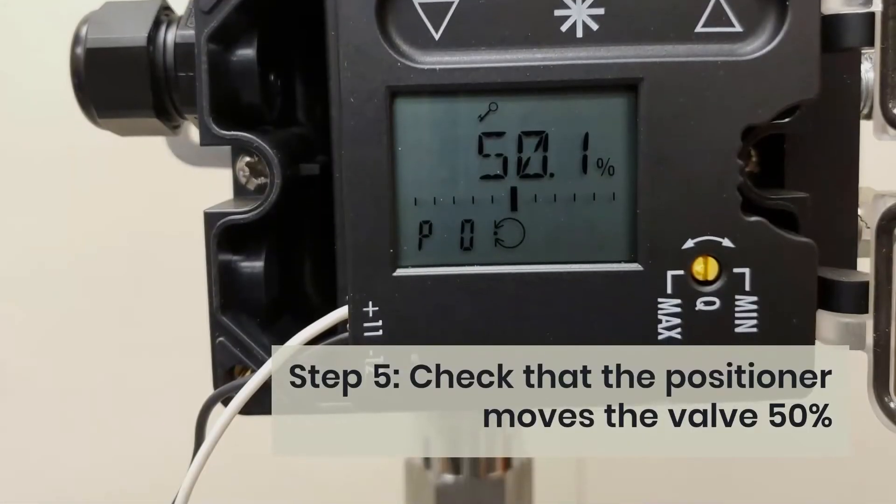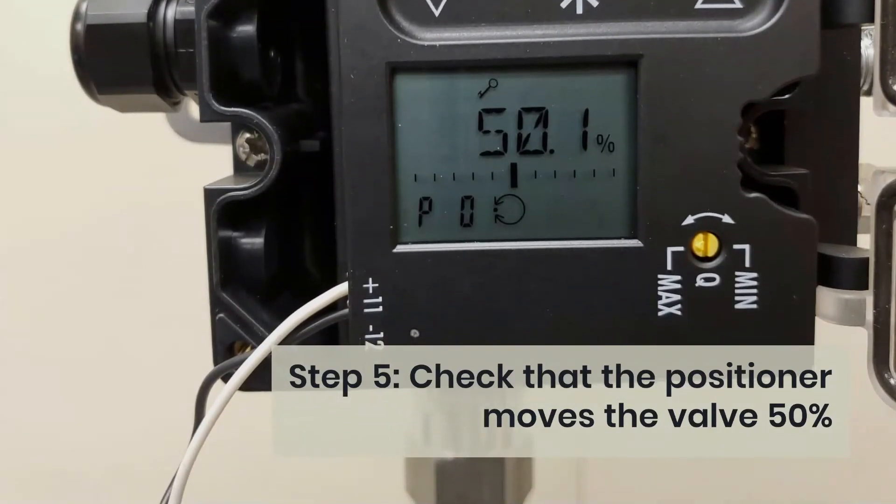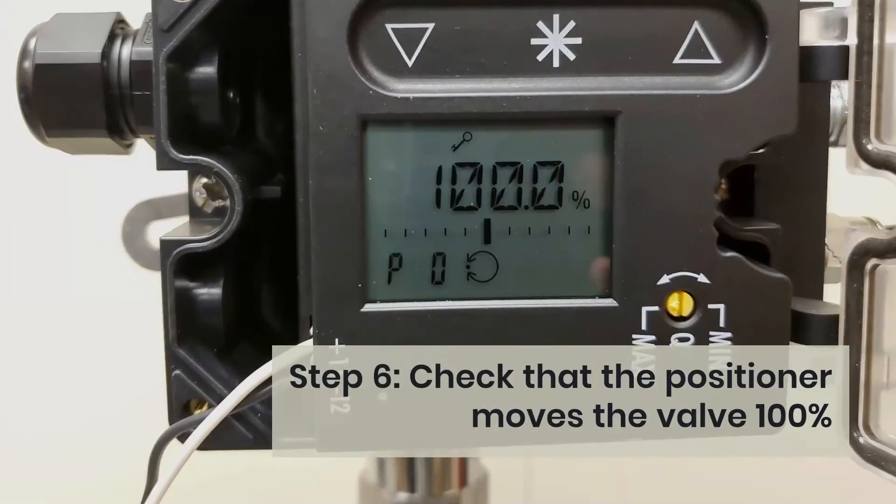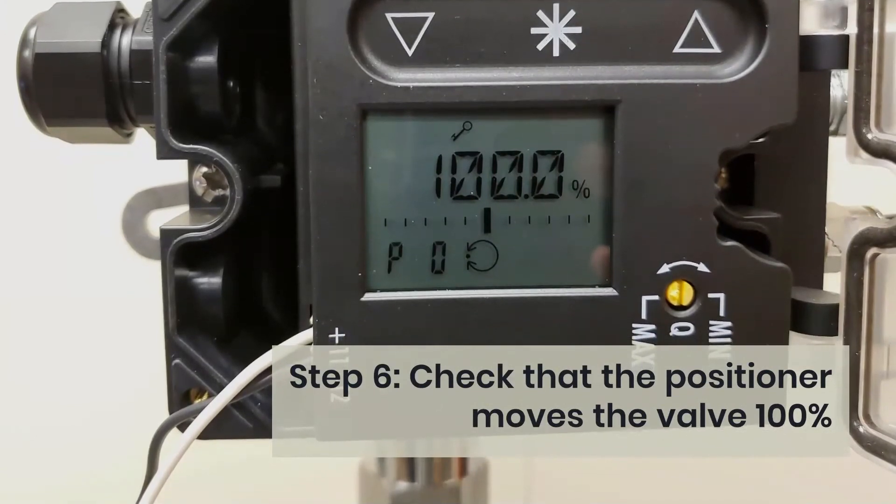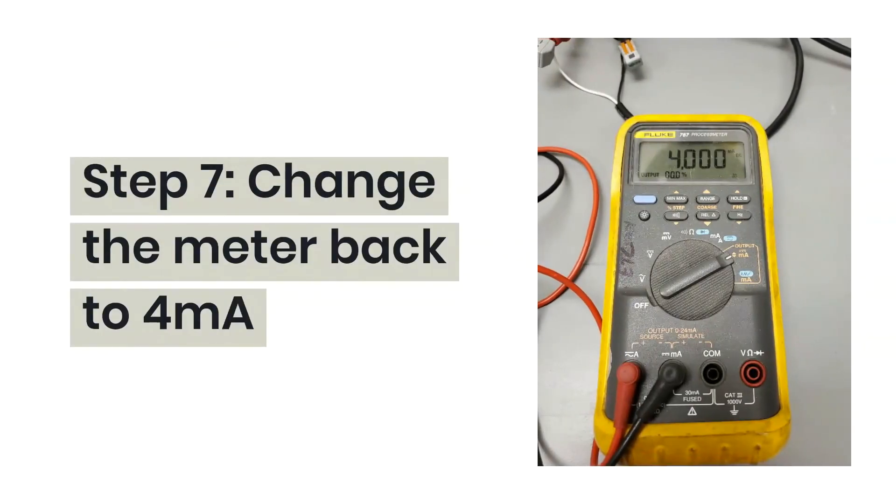Step 5: Check that the positioner moves the valve 50% by changing the meter from 4mA to 12mA. Step 6: Check that the positioner moves the valve 100% by changing the meter from 12mA to 20mA. Step 7: Change the meter back to 4mA.